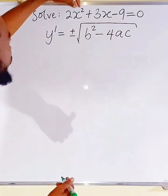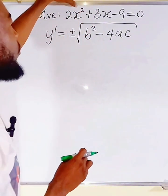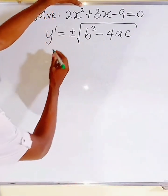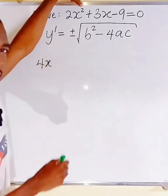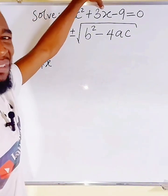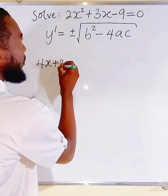So, if you differentiate the first term here, this two will drop down to multiply. We have 2x and the power will reduce by 1. So, we have 4x. And if you differentiate the second term 3x, you are going to obtain only 3. So, we have plus 3 here.